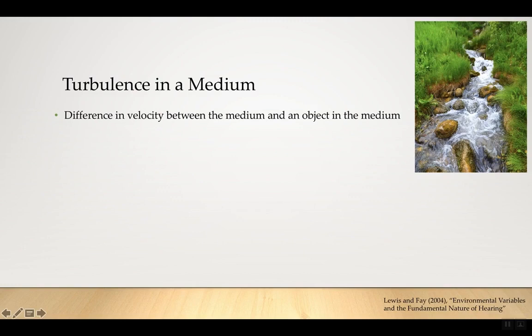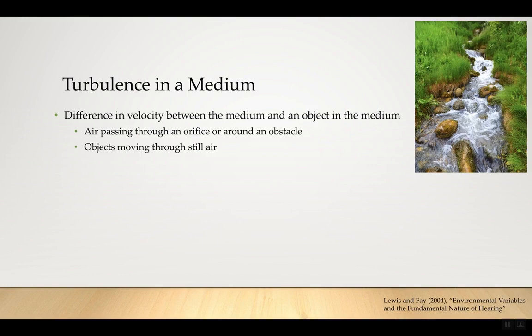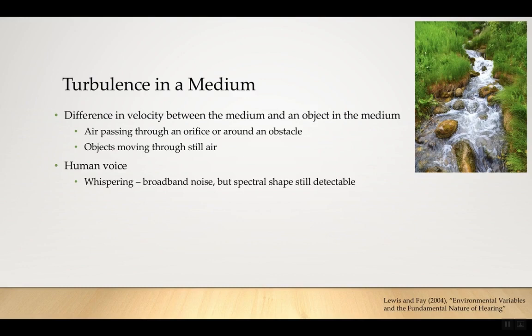Turbulence in a medium is defined as a difference in velocity between the medium and an object in the medium. A babbling brook is an example — the water moves and the rocks stay stable, producing a difference in velocity and sound as the water brushes against the rocks. Other examples include air passing around an orifice or obstacle, the same idea as wind blowing over a rock, or an object moving through the air — like swinging a pool noodle, which produces a humming sound.